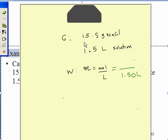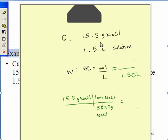However, I do have 15.5 grams of sodium chloride. And with a periodic table, I can calculate the molar mass of sodium chloride. The molar mass of sodium chloride is 58.45 grams. With the molar mass, I can calculate how many moles of sodium chloride I have, if I have 15.5 grams.